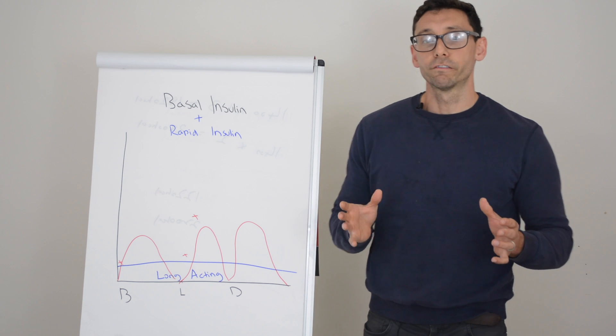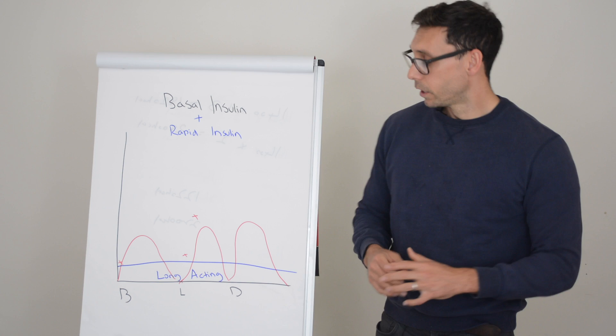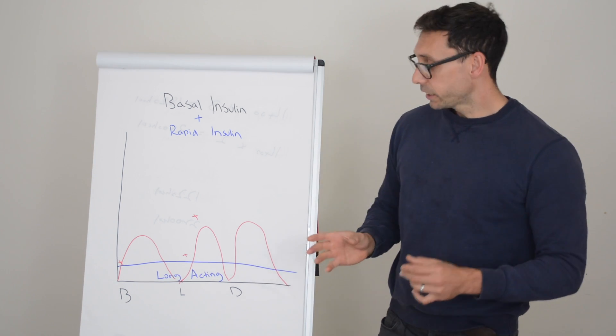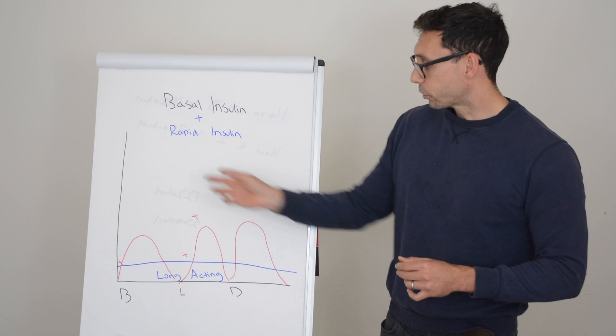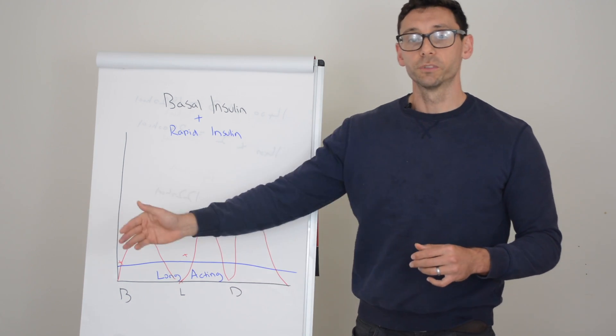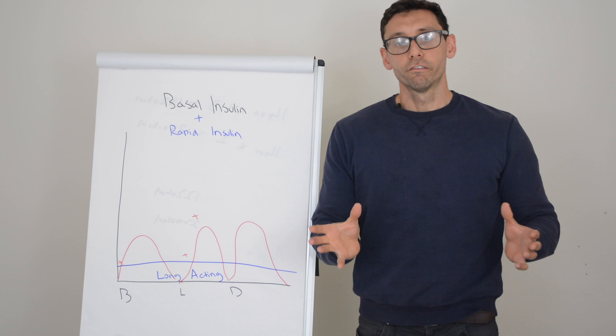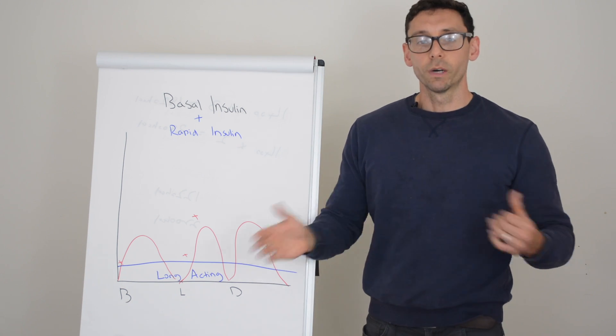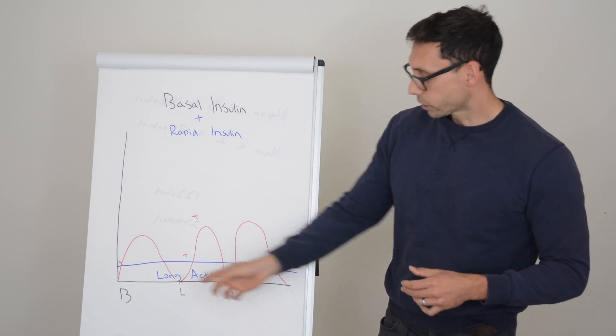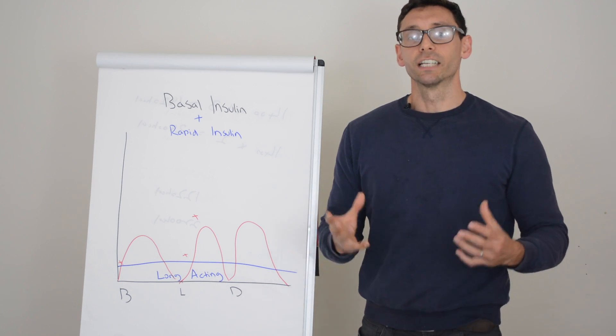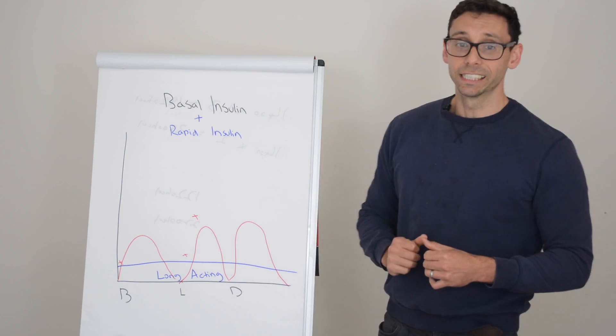One of the key benefits of rapid acting insulin is that it's very flexible. Because it's in and out of your system after four and a half hours, it means you can adjust your doses and correct high glucose levels several times a day to keep your glucose levels where you want them, whereas other insulin preparations that might last 12 or 24 hours don't give you as much flexibility.